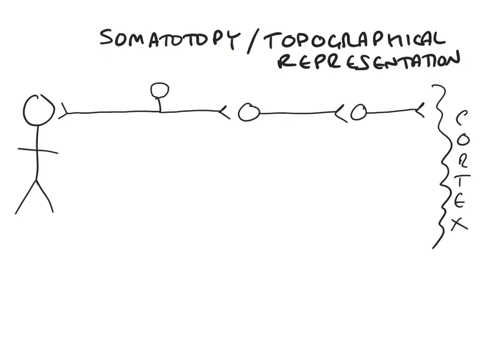This is the primary or first-order sensory neuron; this is the secondary or second-order sensory neuron; and this is the tertiary or third-order sensory neuron. You should recall that the first-order sensory neuron has its cell body in the dorsal root ganglion generally, that the second-order sensory neuron has its cell body in the dorsal horn or the medulla of the brainstem, and that the third-order sensory neuron has its cell body in the thalamus.